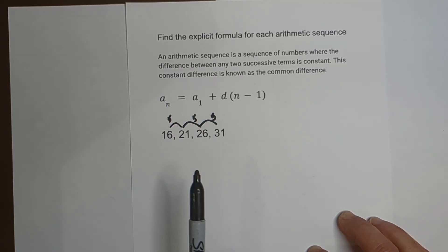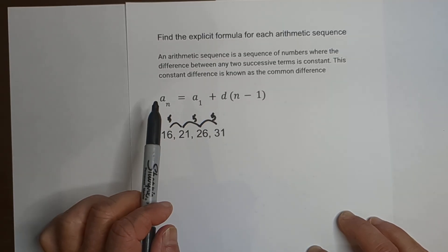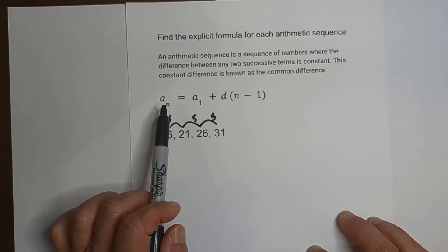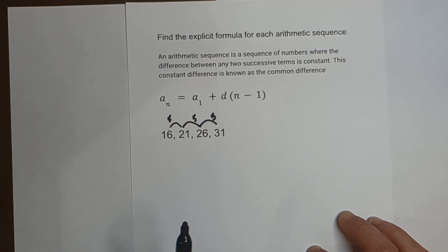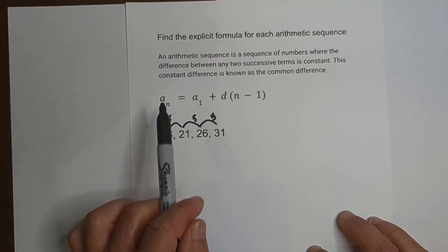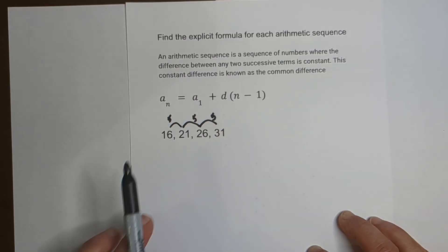This formula allows you to find any term. Say you want to know the 55th term, then you just plug in 55 for n and it gives you that term. But let's first go through and see what all these terms stand for.